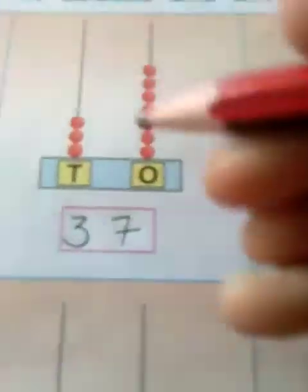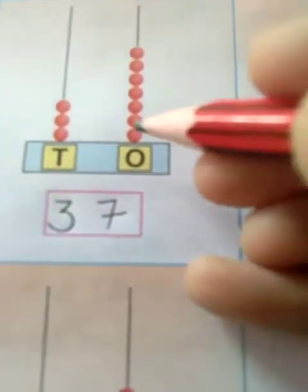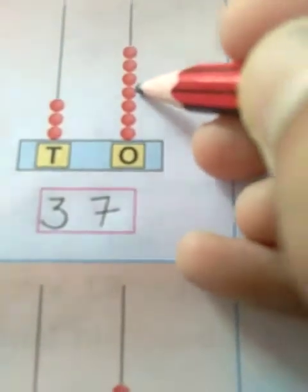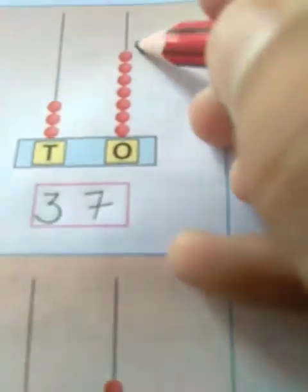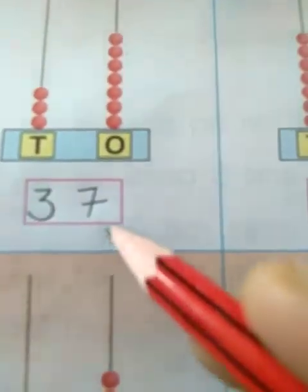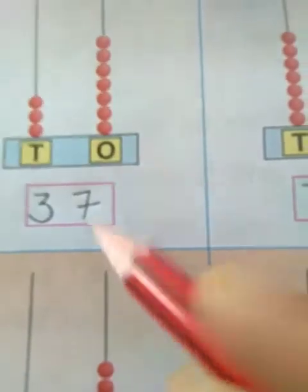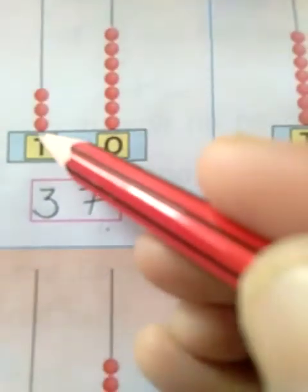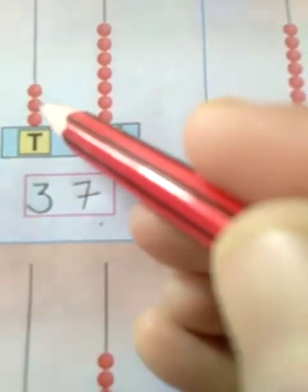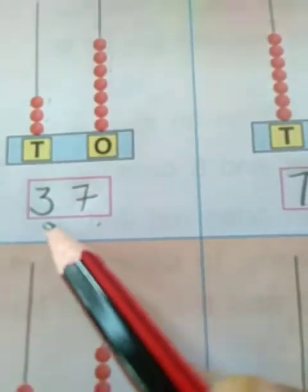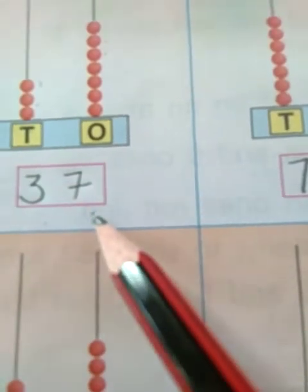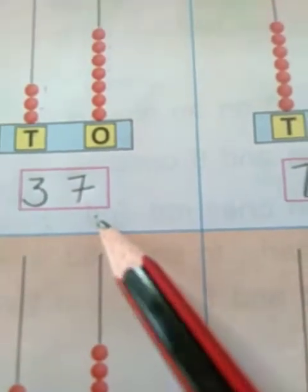Now we can count this. 1, 2, 3, 4, 5, 6, 7. So we can write here 7. And count this: 1, 2, 3. We can write here 3. So 3 and 7 — thirty-seven.